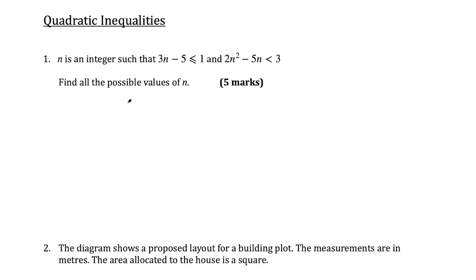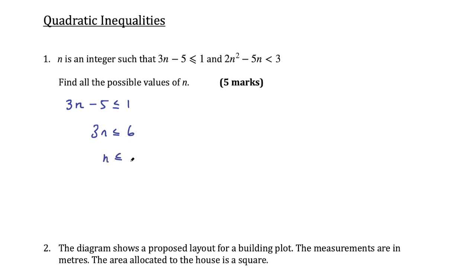We are looking for possible values of n. This is a linear inequality so you should be okay with this. Let's focus on this one firstly: 3n - 5 ≤ 1. You can rearrange this just as you would an equation to make n the subject. Add 5 to the right hand side: 3n ≤ 6, and then n ≤ 2. So n is less than or equal to 2. That's my first inequality.